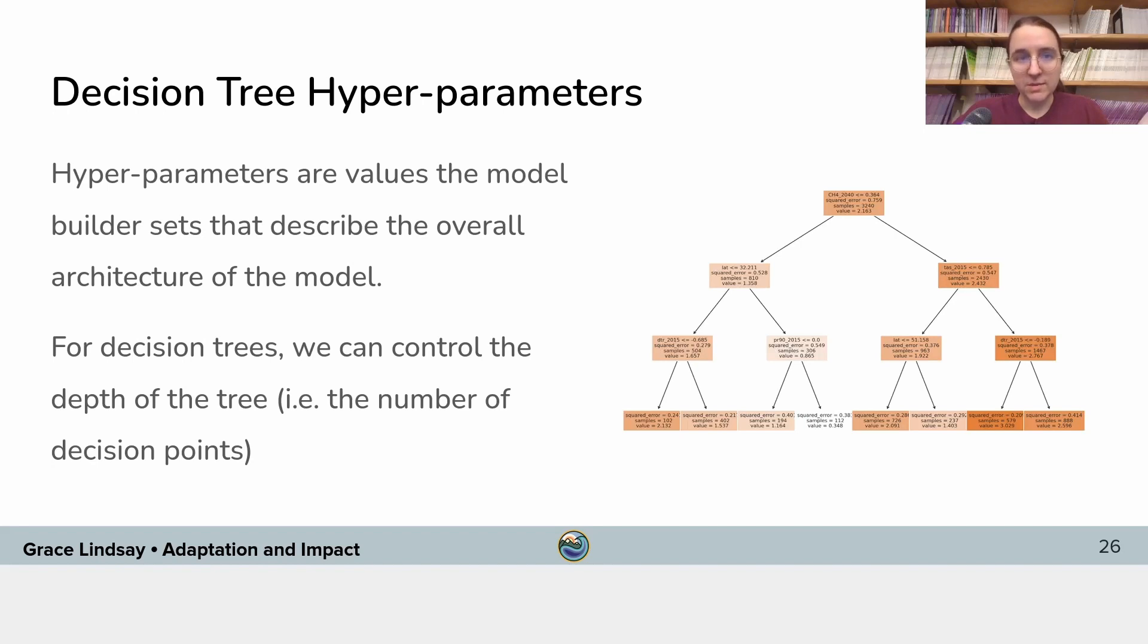What we need to decide about the model, that's called the hyperparameter. So in a machine learning model, there's the free parameters that the learning algorithm learns on its own. It sets those values. And then there's hyperparameters that you as the model builder need to set. So for decision trees, we can control the depth of the tree. That's one of the hyperparameters associated with the decision tree. And the depth just means how many splits do you do before you get to the output of the model. So here we're doing one split, two splits, three splits, and then we get to the output of the model. So that's something that we can control when we build these decision trees.